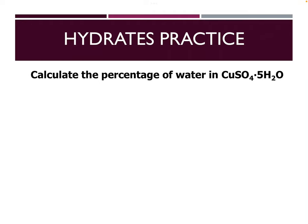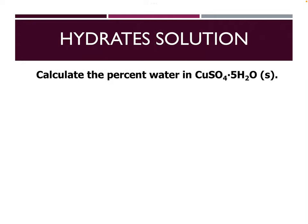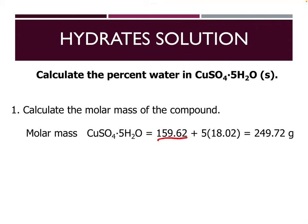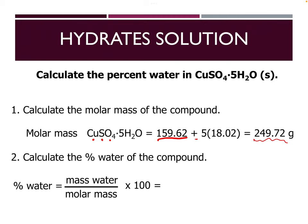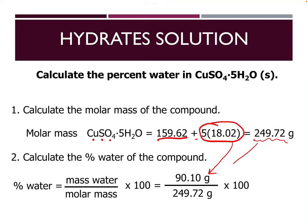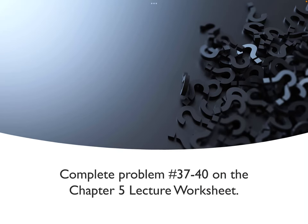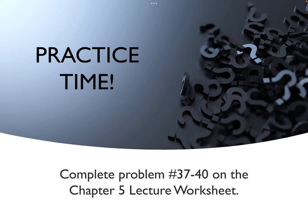The molar mass of copper sulfate pentahydrate: copper plus sulfur plus four oxygens gives 159.62, plus five times 18.02 for the water molecules. Adding those together gives our total molar mass. To calculate the percent of water, take the mass of water — 5 times 18.02 — on top, divided by the molar mass, times 100. Complete problems 37 to 40 on the chapter 5 lecture worksheet, then come back and we'll keep going.